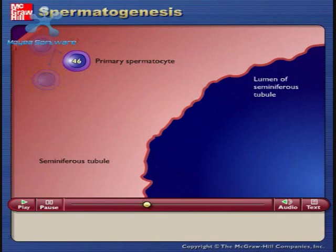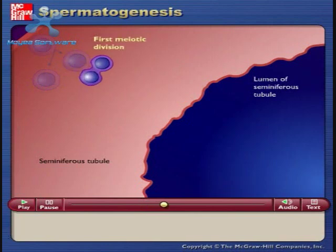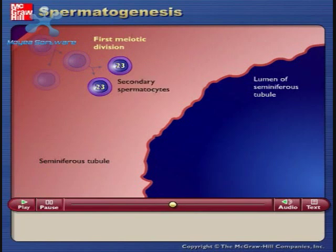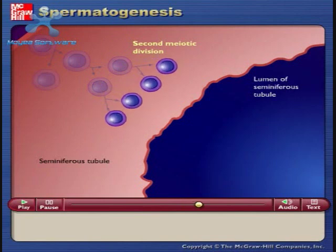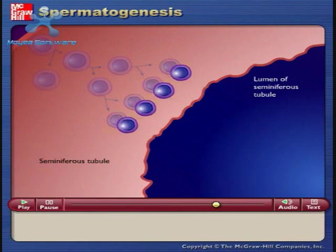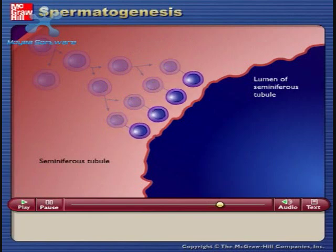The primary spermatocyte divides by meiosis to form secondary spermatocytes. Secondary spermatocytes divide again to form spermatids. The spermatids differentiate into sperm cells.